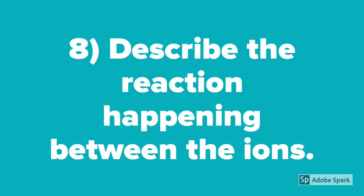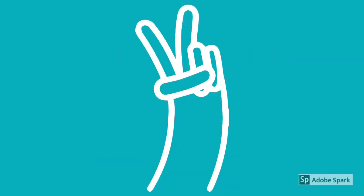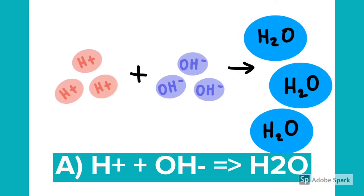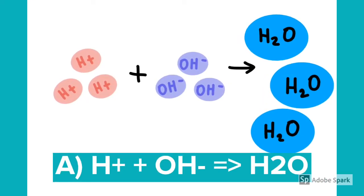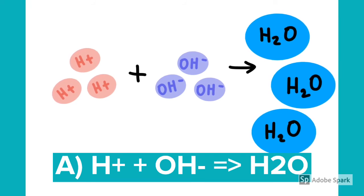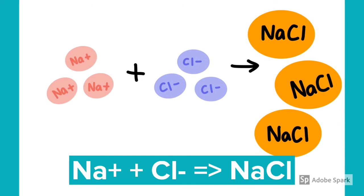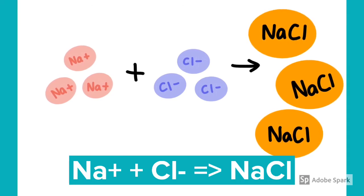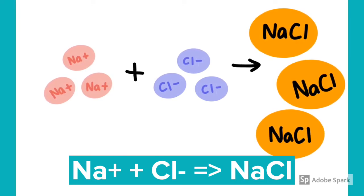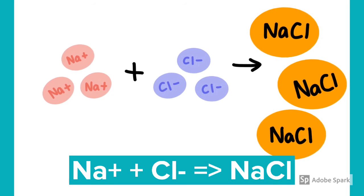Question number 8: Describe the reaction happening between the ions in Dan's experiment. H plus ions and OH minus ions react to produce H2O, or water, while Na plus ions and Cl minus ions react to produce NaCl, which is sodium chloride.